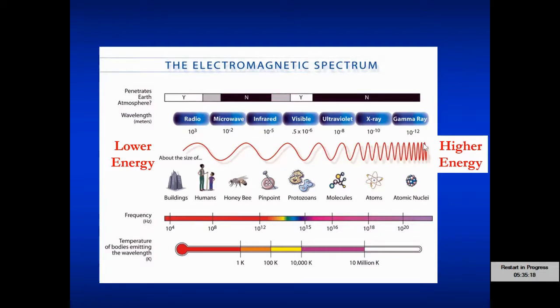Gamma ray radiation, x-ray radiation, ultraviolet, all damaging to life as we know it. The visible part of the spectrum is kind of the middle part of the spectrum, and then the lower energy being infrared, microwave, and radio.